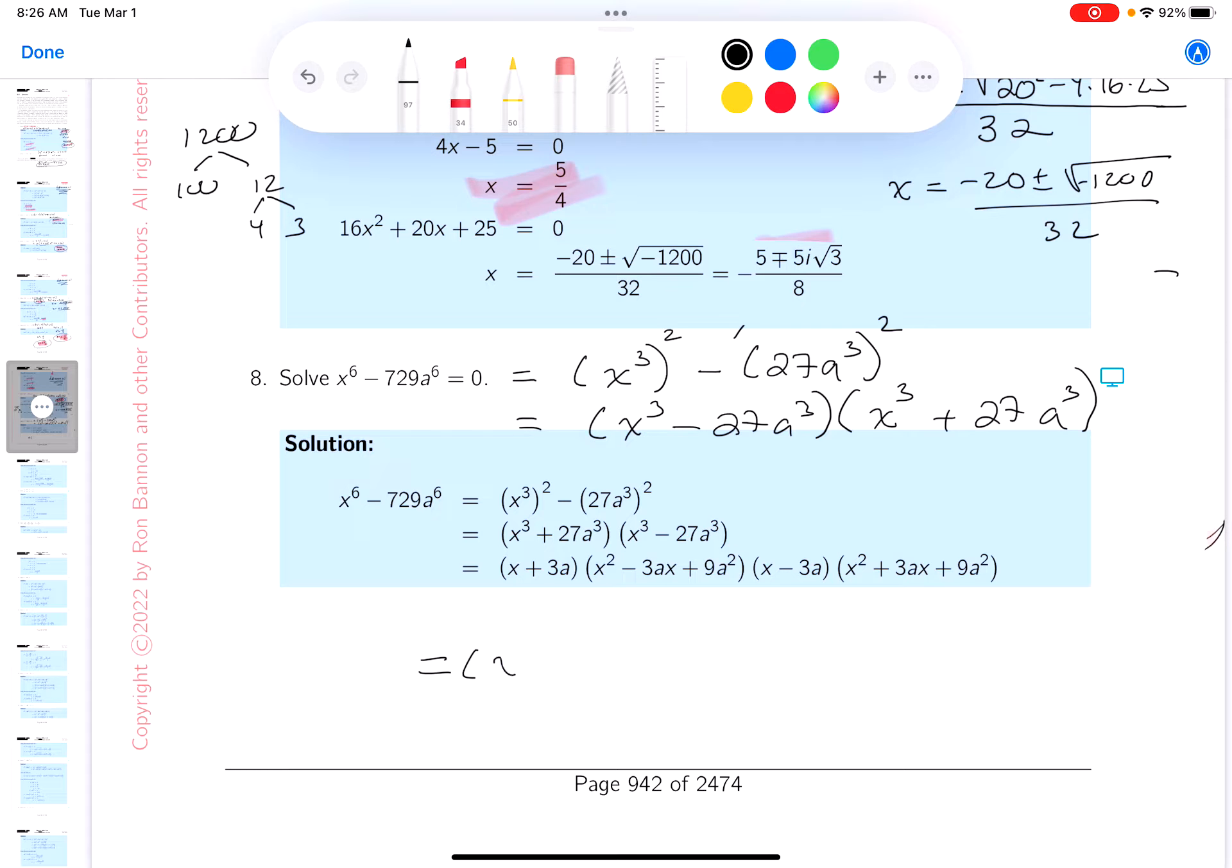This would be x minus 3a. Then you get x² plus 3ax plus 9a². And then you get, let's see, x plus 3a, x² minus 3ax plus 9a².